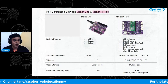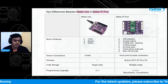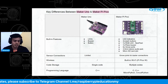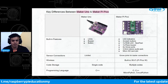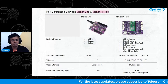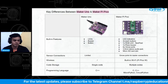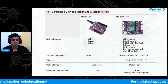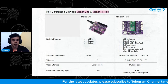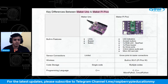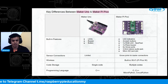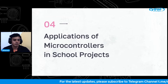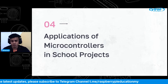Regarding code storage: with the Maker Onu you can only save and use a single code at a time, but with the Maker Pi Pico you can save multiple codes — so you don't have to rewrite code every time you switch projects; you can save them all and run any one whenever you want. For programming language: the Maker Onu uses C++, while the Maker Pi Pico supports C++, MicroPython, and CircuitPython, giving you more options to find a suitable language and start programming your microcontroller.